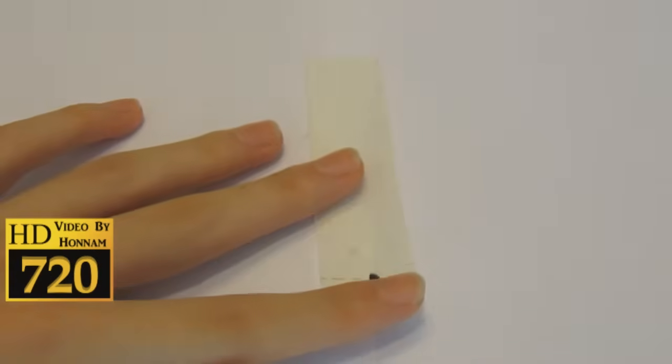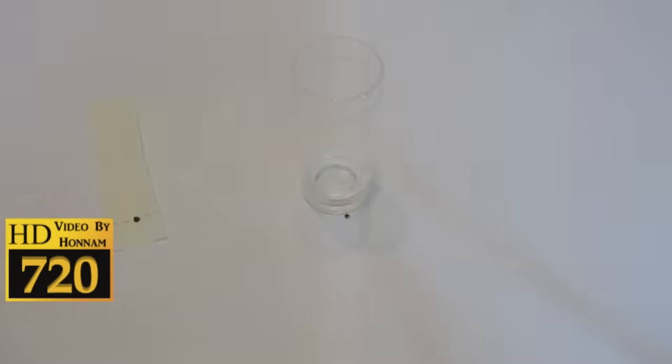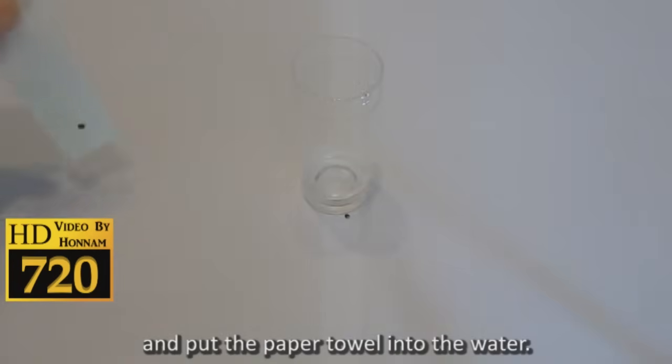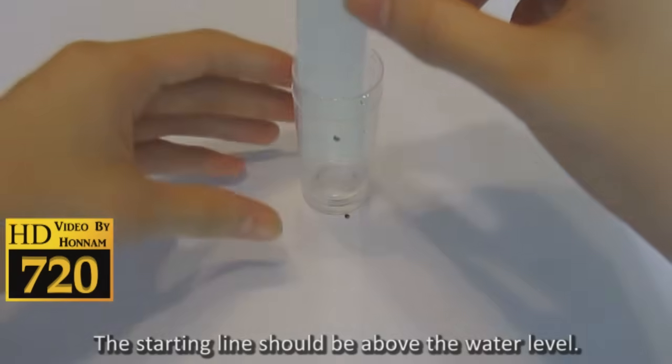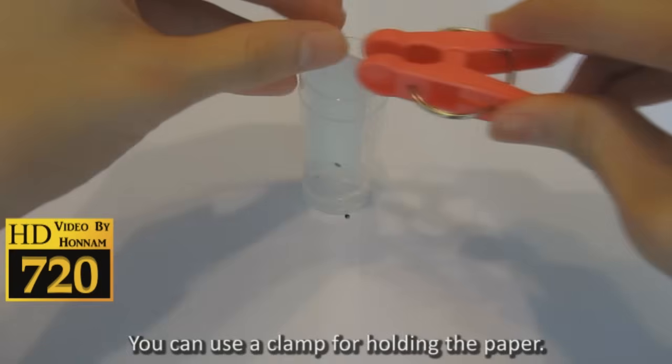Now prepare a tube. Pour some water into it and put the paper towel into the water. The starting line should be above the water level. You can use a clamp for holding the paper.